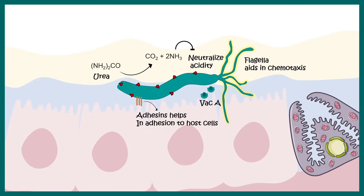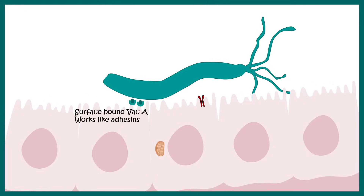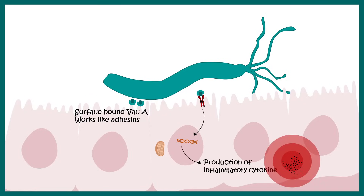Helicobacter pylori secretes VAC-A and CAG-A, which are two cytotoxins responsible for the infection and pathogenicity of this bacterium. VAC-A can bind to the membrane of the bacteria and work as an adhesion molecule, allowing surface adhesion. VAC-A can also bind to specific receptors on the gastric mucosal cells, ultimately leading to an inflammatory signal and production of inflammatory cytokines, which brings about inflammation in the local region.